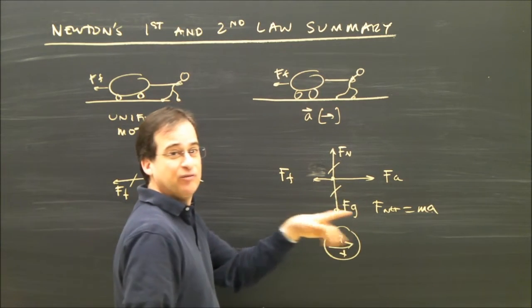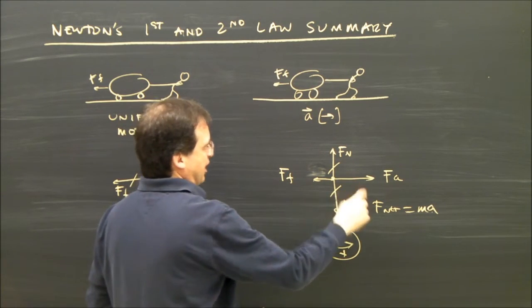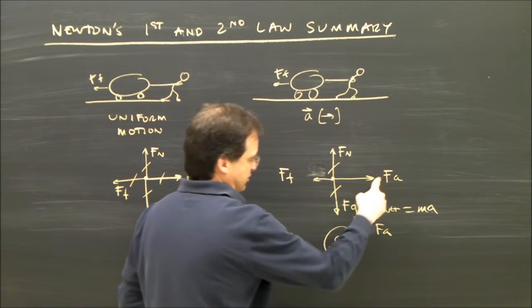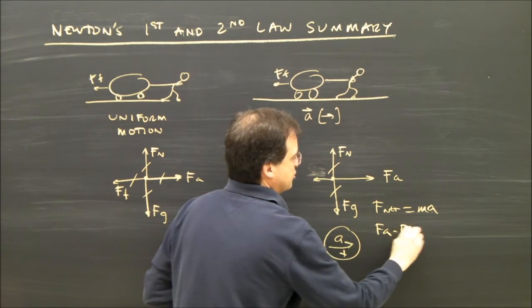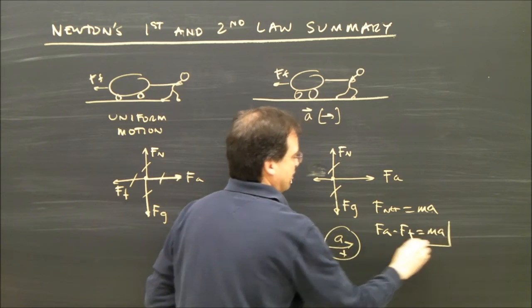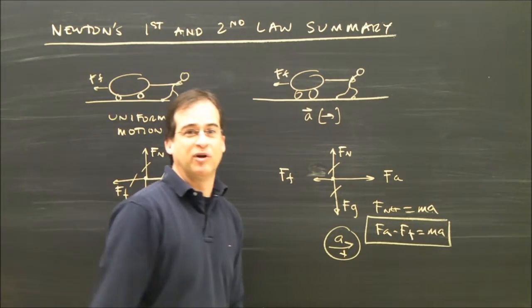So I add up all the forces in the direction of acceleration. FA is positive, minus force of friction equals MA. There's the equation that's going to give me what I want.